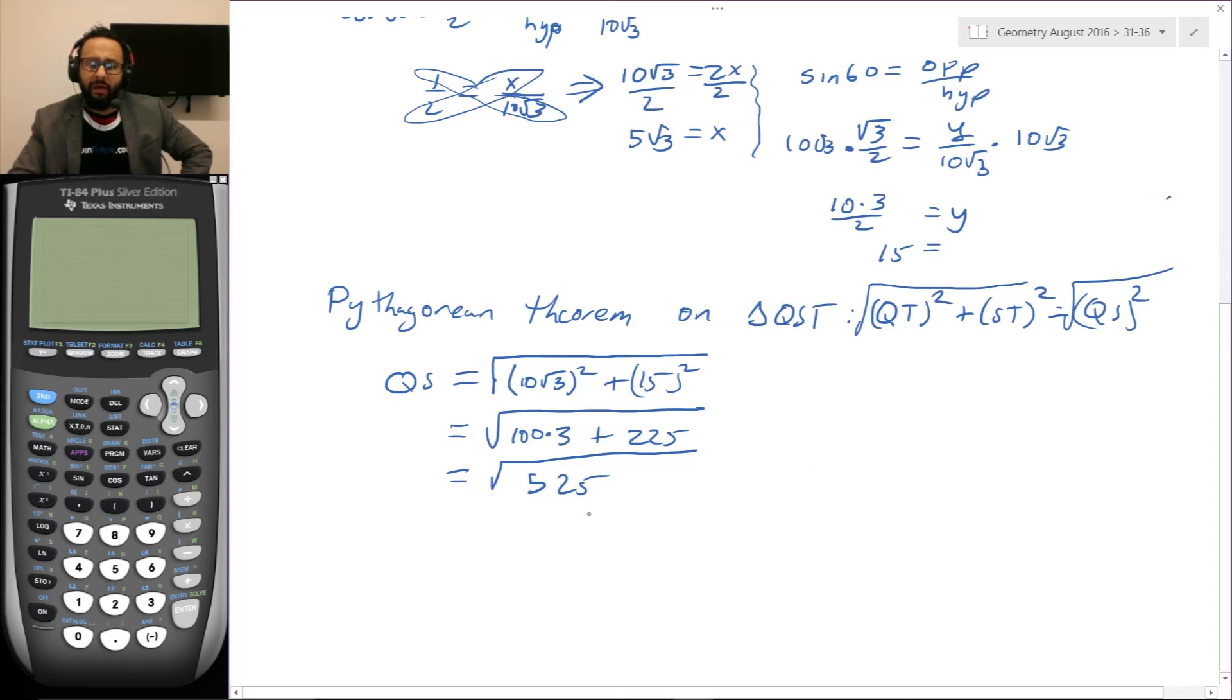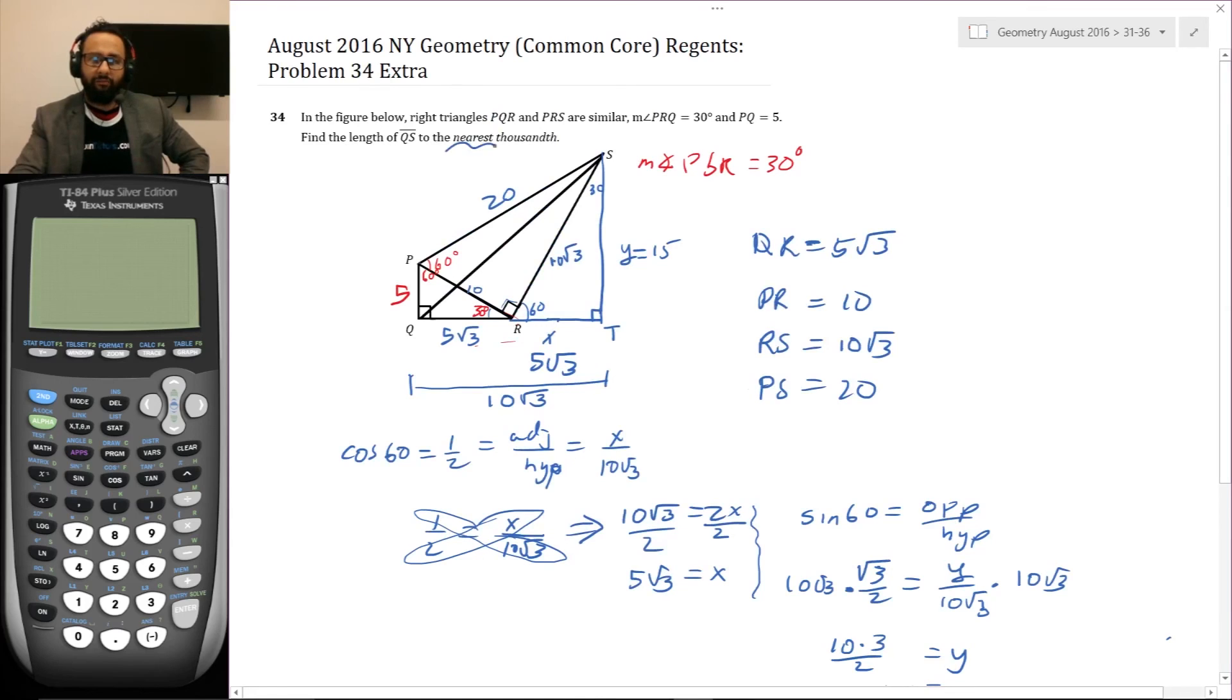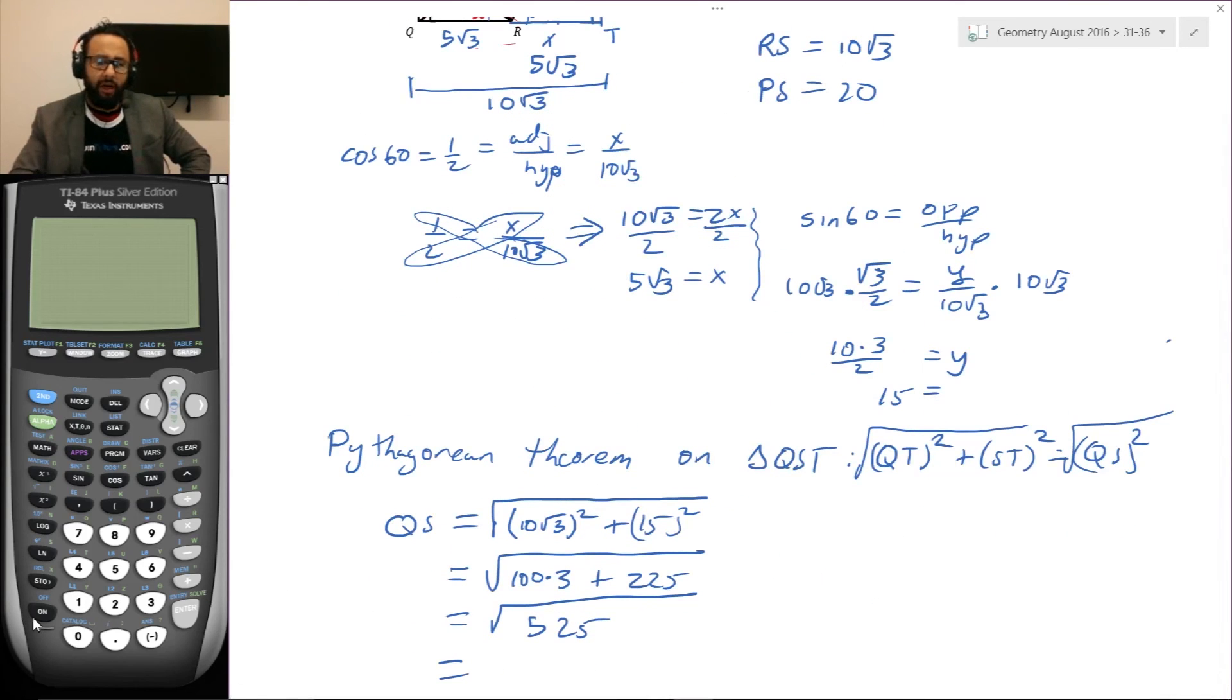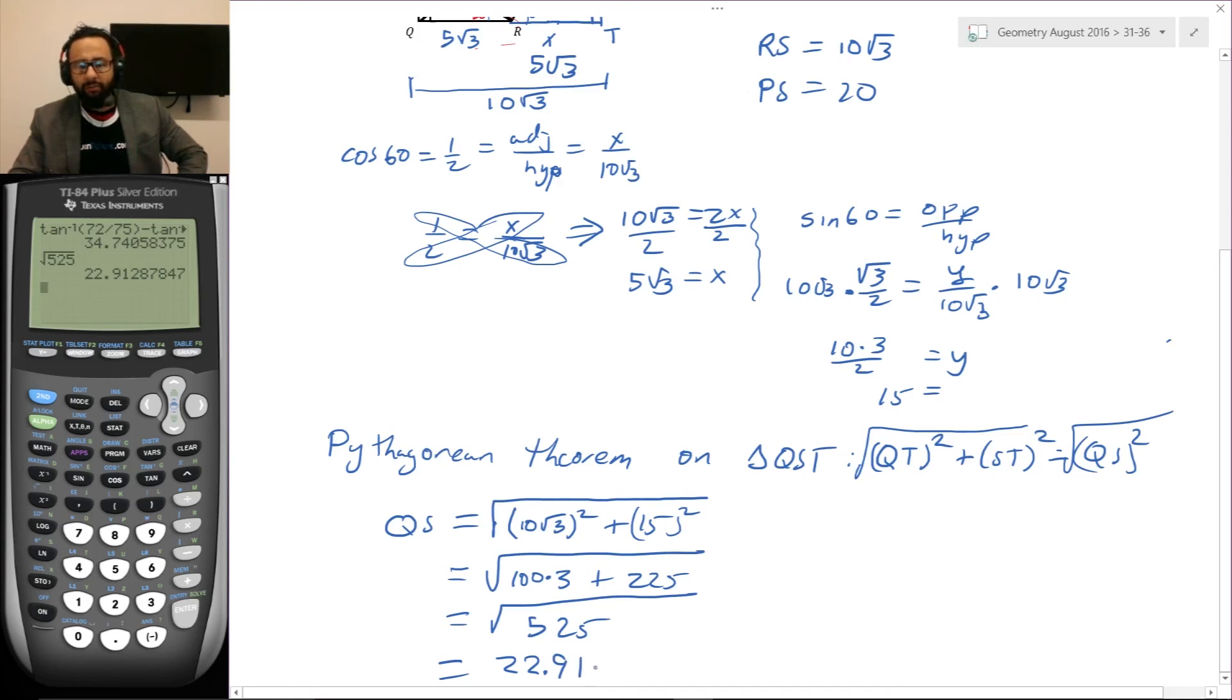QS is equal to the square root of QT is 10 rad three squared plus ST, which is 15 squared. 10 rad three squared is 10 squared is 100, rad three squared is three, 15 squared is 225. And this is equal to 300 plus 225 is 525. This is the exact answer. I can factor out the perfect squares. 25 is a factor of 525, its factor pair is 21. So this is equal to 5 radical 21. That's the exact answer, but they asked for the answer to the nearest thousandth. The square root of 525 is 22.91287, so 22.913.